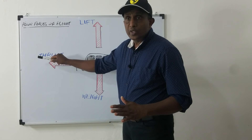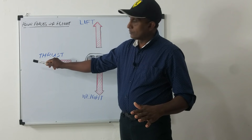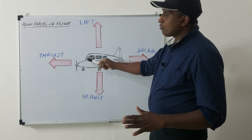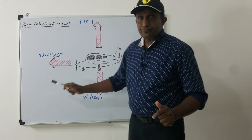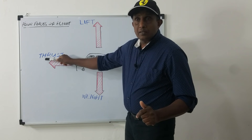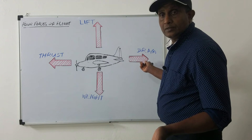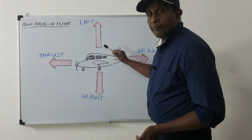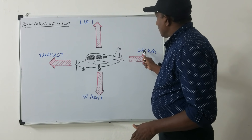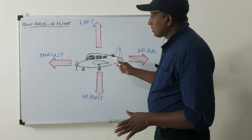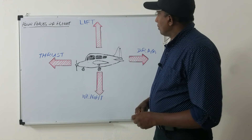Thrust varies with the amount of engine power being used. Opposing thrust is drag, which is a backward force. Drag limits the speed of the airplane. If drag increases, the speed of the airplane will decrease.